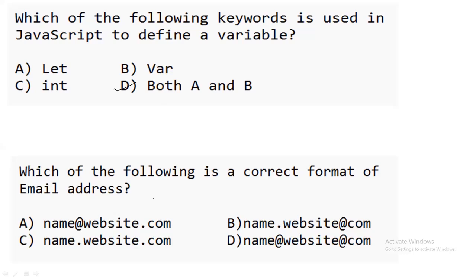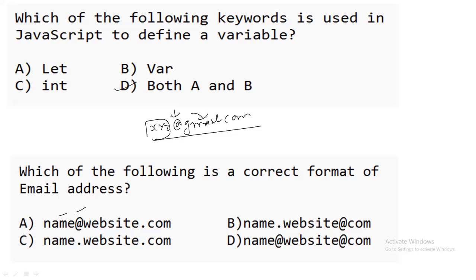The next question: which of the following is a correct format of an email address? Consider an email like xyz@gmail.com — that is a valid email ID. It follows the format: name, then the @ symbol, then the website/domain like gmail.com. So option A — name@website.com — is the correct answer.